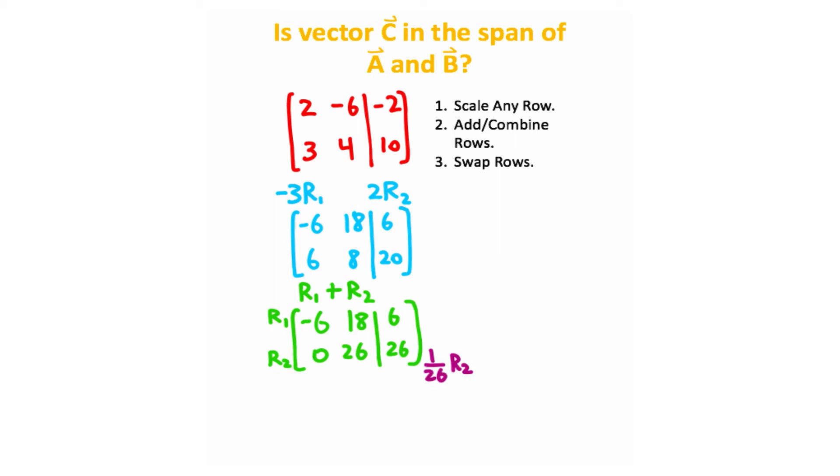So now that we have this, I'm going to go ahead and scale the bottom row, row two, by one twenty-sixth. That's going to give me ones on the bottom row, which is going to be easier to deal with.